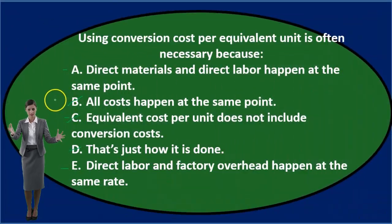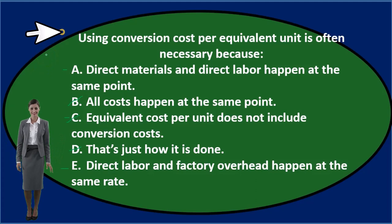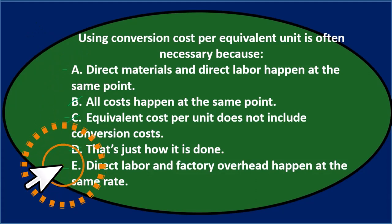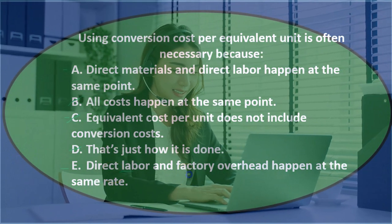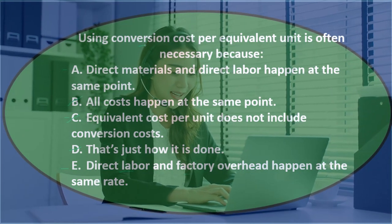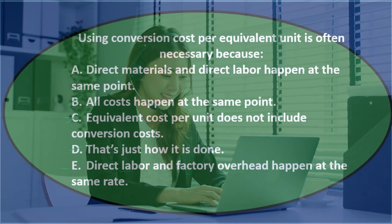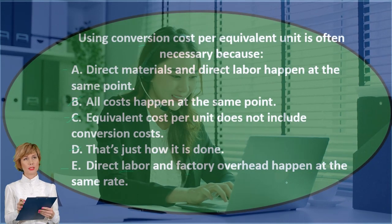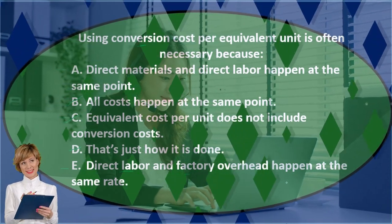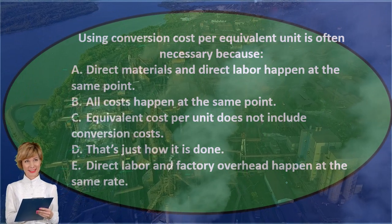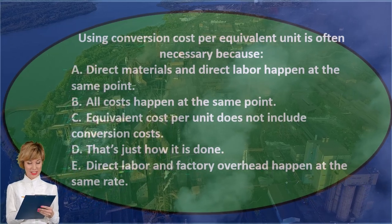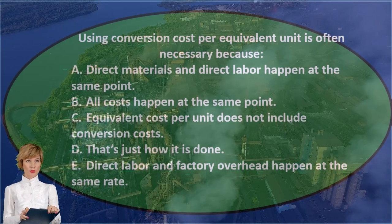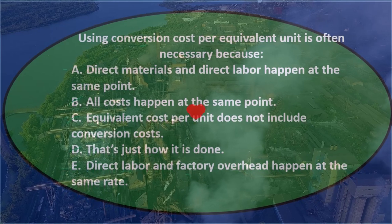So we narrow it to A and E. Option E says direct labor and factory overhead happen at the same rate. Notice that A and E look similar — direct materials and direct labor at the same point versus direct labor and overhead at the same rate. Since we're talking about labor and overhead, which are the conversion costs, E lines up better. The idea is that because labor and overhead happen at the same rate, we can group them together as conversion costs.